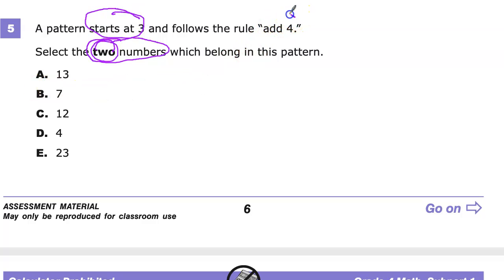We're going to be adding four. If we start at three like our question tells us and add four to that, three plus four is seven. Then we're going to start at seven and add four to that which is eleven.